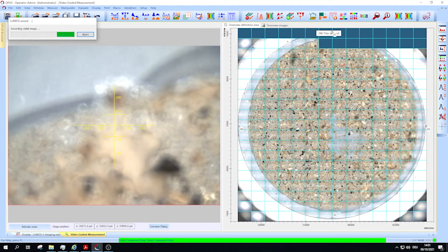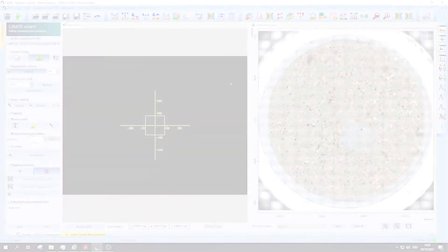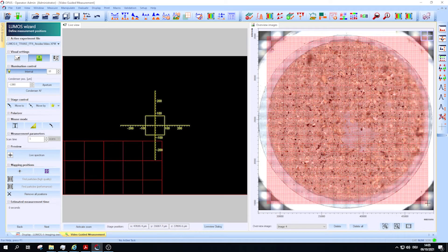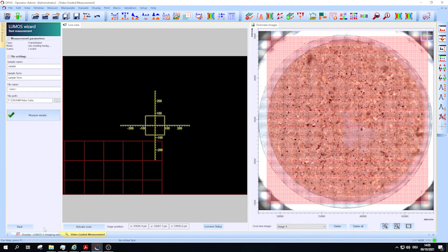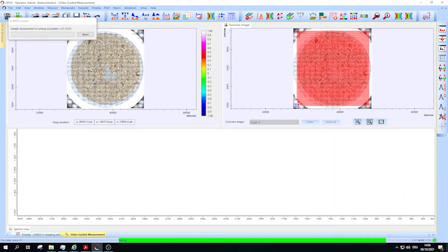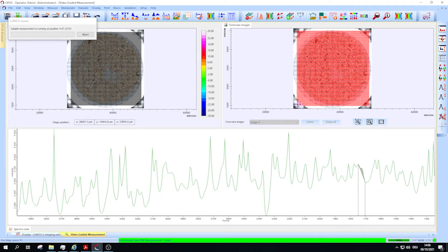First, we take an overview image to navigate the microplastic filter. Then, to begin the FTIR imaging, we simply select the region of interest, click next and type in a name, and finally start the measurement. With only three steps, we got our microplastic analyzer up and running.